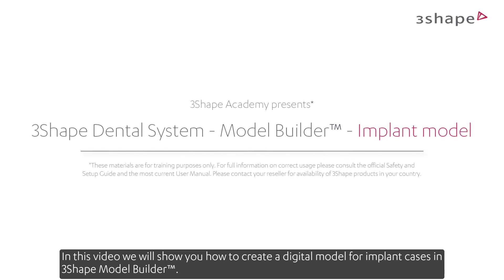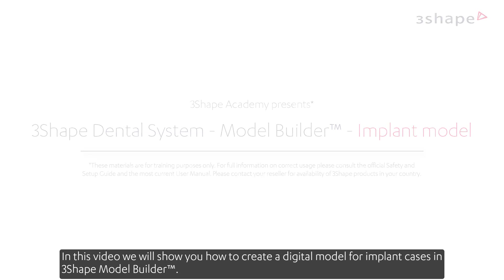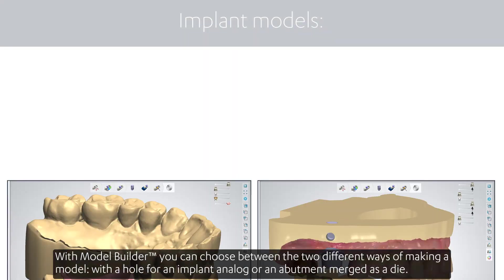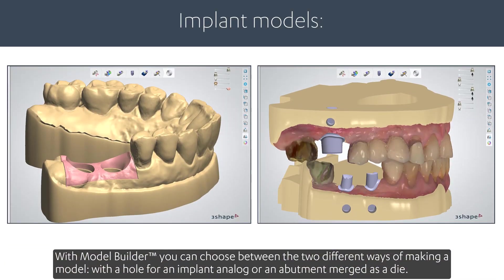In this video we will show you how to create a digital model for implant cases in 3Shape Model Builder. With Model Builder you can choose between two different ways of making a model: with a hole for an implant analogue, or an abutment merged as a die.